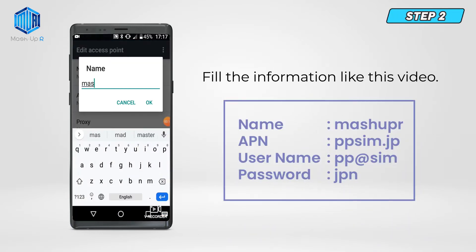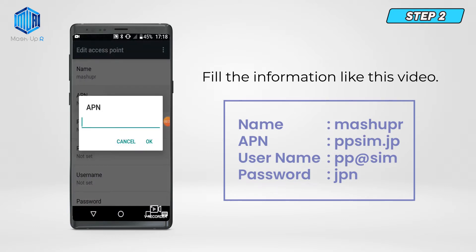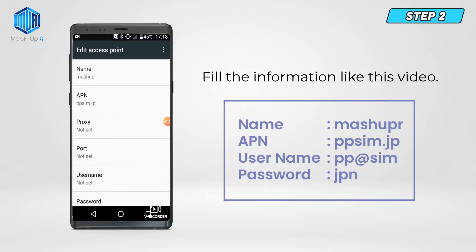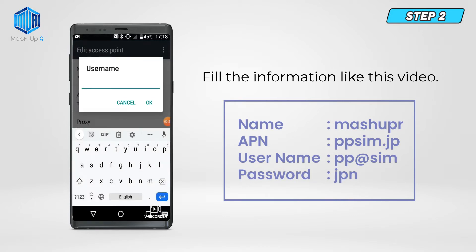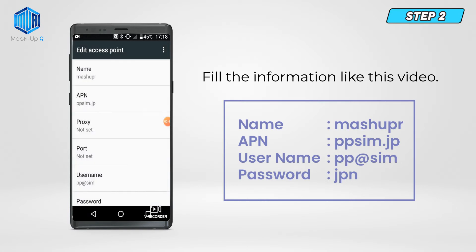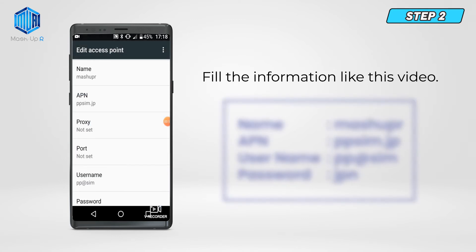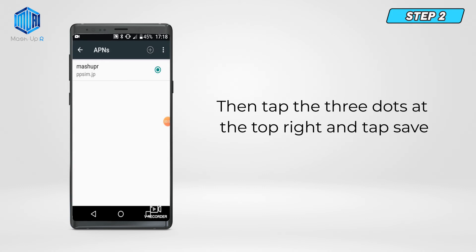Step 2. Fill in the information as shown in this video. Then tap the three dots at the top right and tap Save.